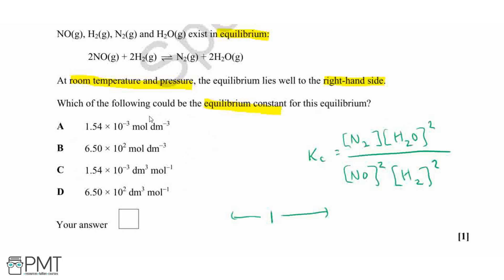So out of our values here, our answer could either be B or D, because these are the values which are much greater than 1. So to determine which is which, we've just got to look at the units now.